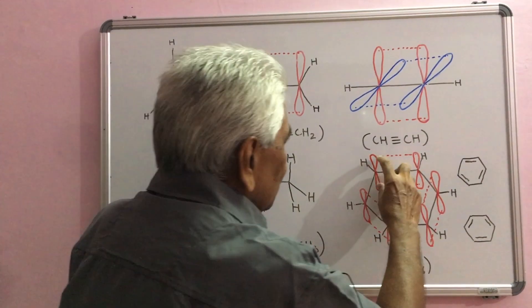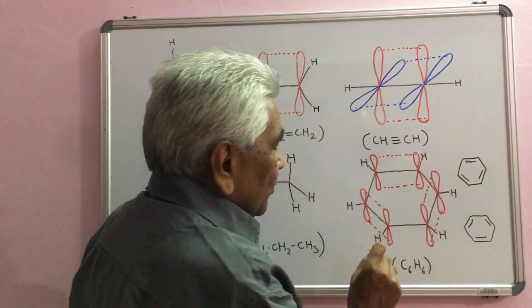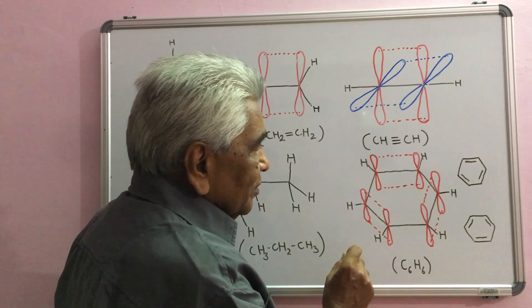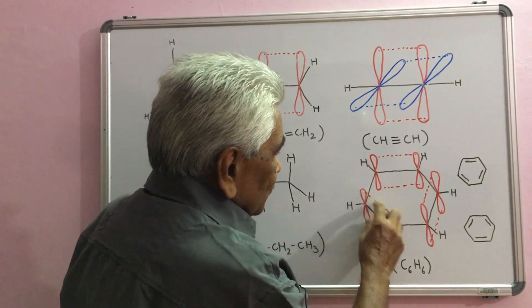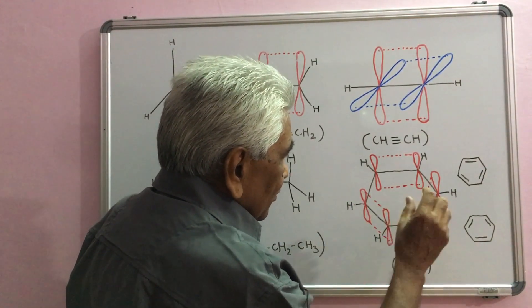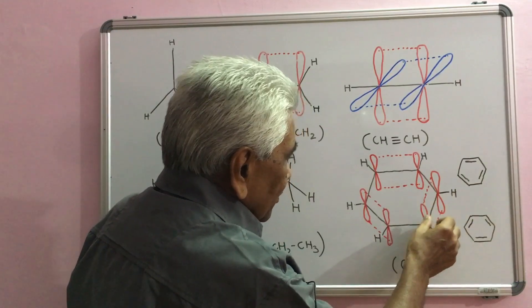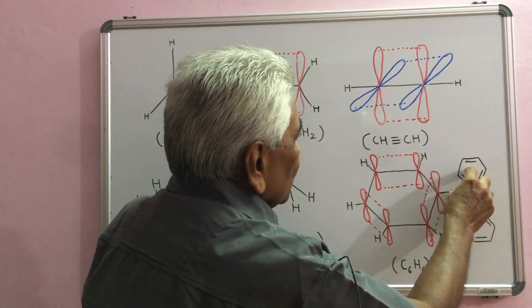Now, if these two overlap, you get a pi orbital here, one pi molecular orbital here, one pi molecular orbital here. We write it like this - three double bonds.